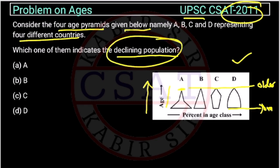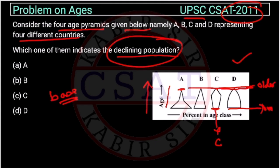There will be declining population when the base should be small. So, base is small in which one? Base should be smaller than these older population. So, you have to see the base, this figure in C, here, the base is small.